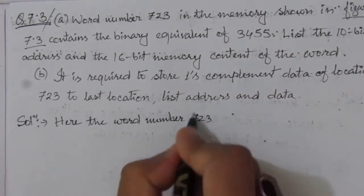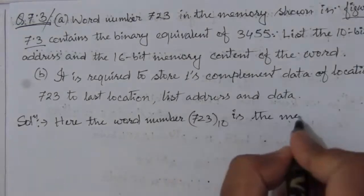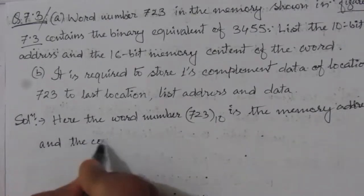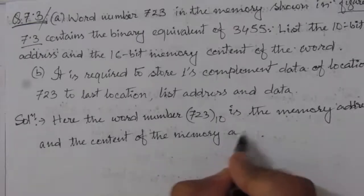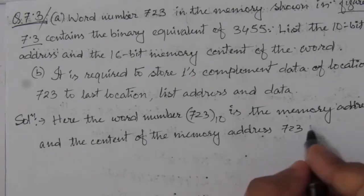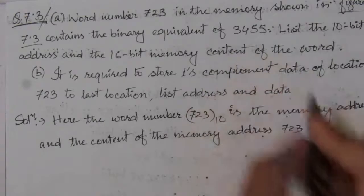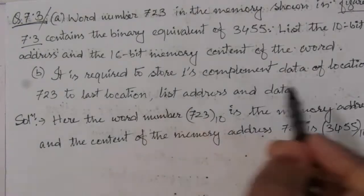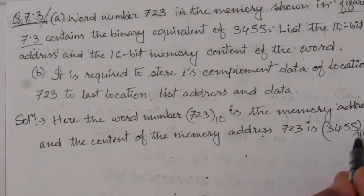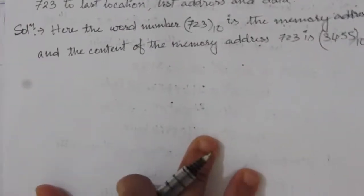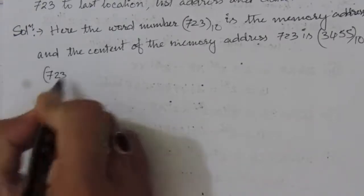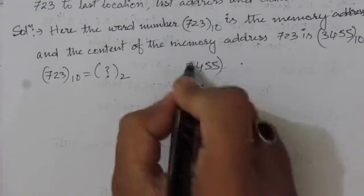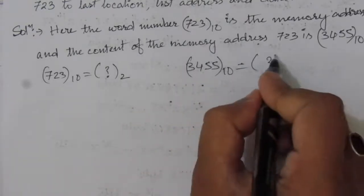Word number 723 is in decimal, base 10 — this is the memory address. The content of memory address 723 is 3455, also in decimal — this is the data. These are the two given conditions. We need to represent this address in a 10-bit memory address and this data as a 16-bit memory content, so we need to find the binary equivalent of both 723 and 3455.